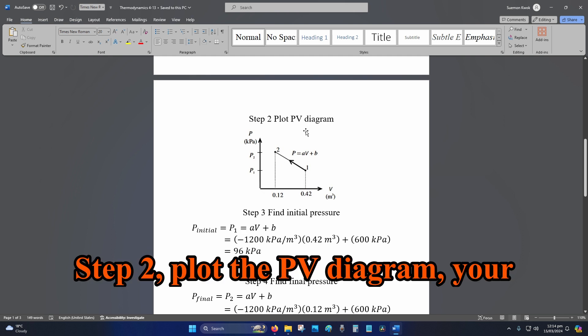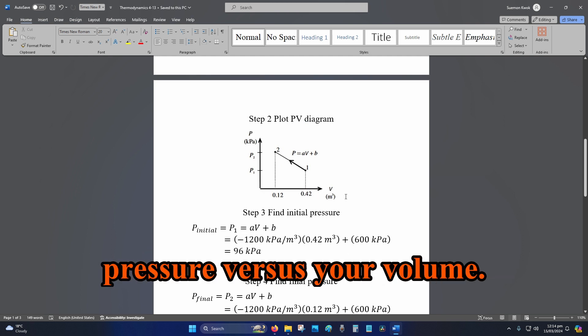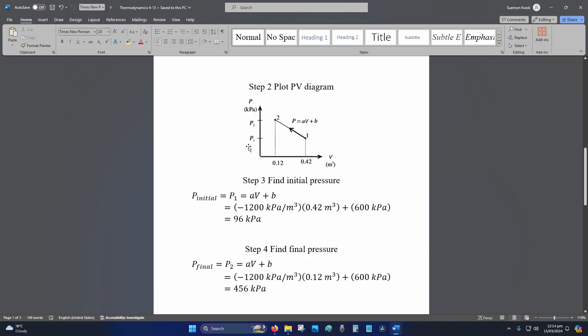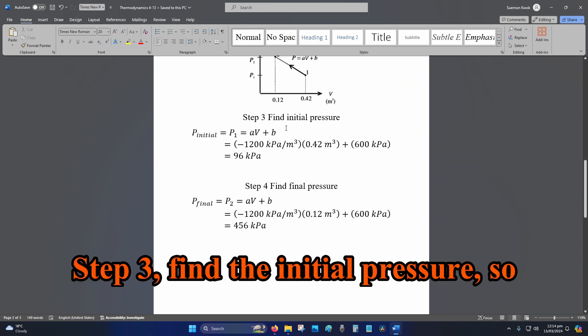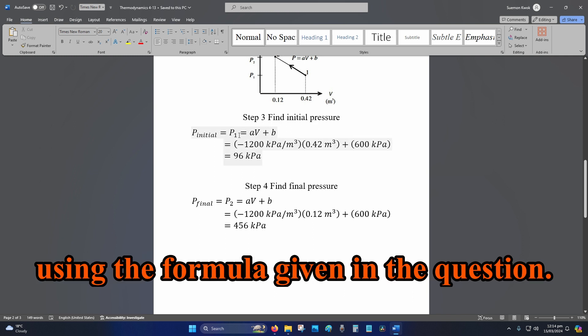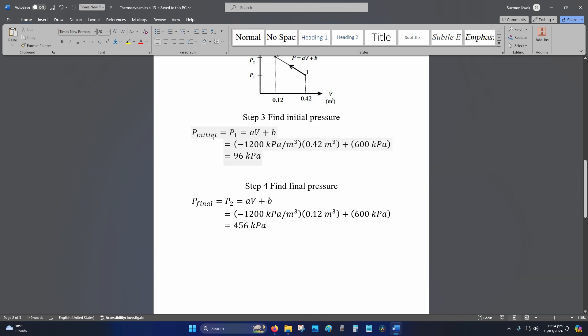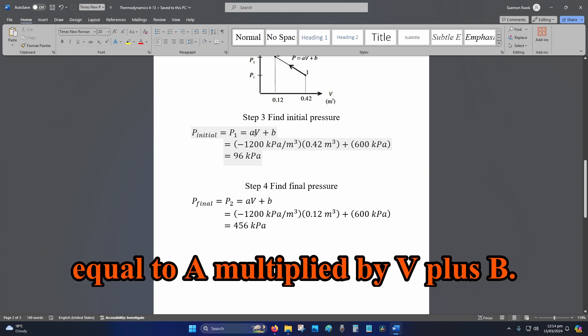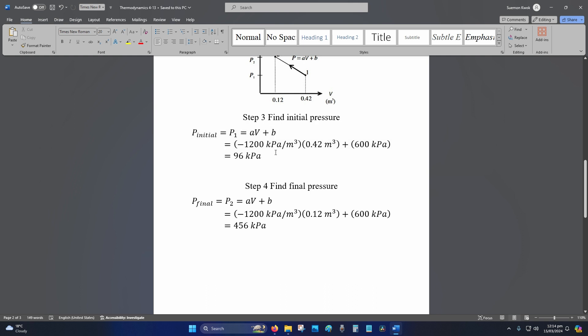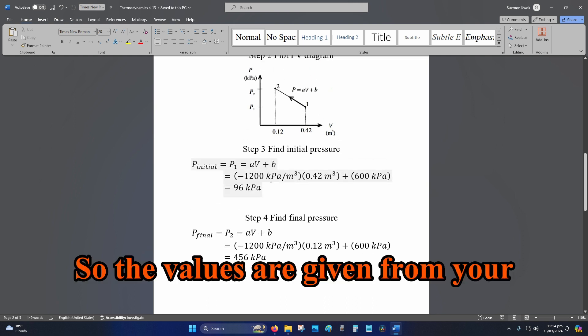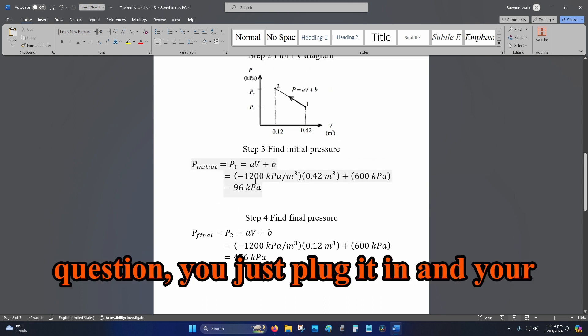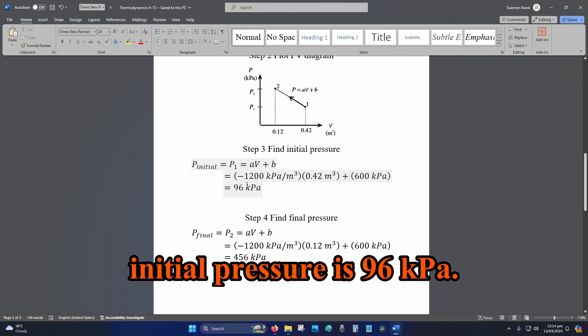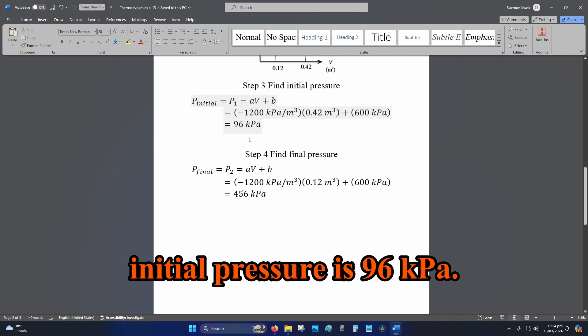Step 2, plot the PV diagram, your pressure versus your volume. Step 3, find the initial pressure using the formula given in the question. So P initial equals P1, which equals A multiplied by V plus B. Plug in the values from your question and your initial pressure is 96 kPa.